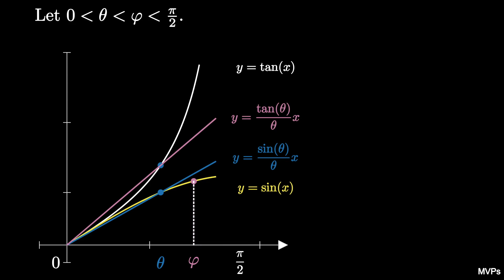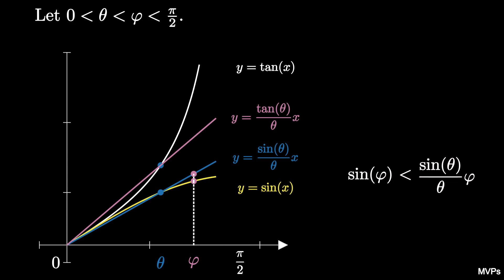If we plug phi into the sine function, we see that we have sine of phi, and this is less than what happens when we plug phi into the secant line, which is sine of theta over theta times phi. Likewise, if we plug phi into the secant line of the tangent function, we get a value of tangent theta over theta times phi, and that must be less than what happens when we plug phi into the tangent function, which gives us tangent of phi.